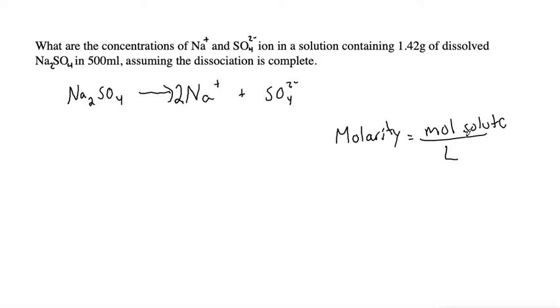So in order to find the molarity, we need to know what the moles of the solute are and the liters of solution. We were given that we're dissolving it in 500 milliliters, which we'll assume is the milliliters of solution, and if we convert that to liters, that would be 0.5 liters of solution.